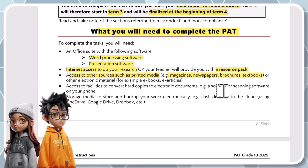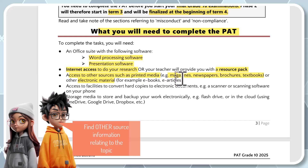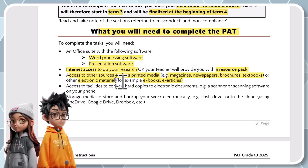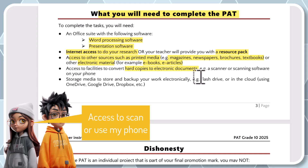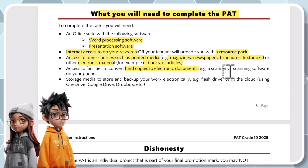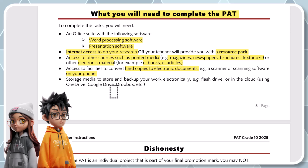You also need access to other sources. A lot of people through the years only focus on internet-based sources — but when we mark the PAT there are mark allocations for other sources. Please try to get information not just from the internet, but also from magazines, newspapers, brochures, textbooks, or other electronic media like ebooks or e-articles on the topic. You also need access to facilities to convert hard copies to electronic documents — hopefully your teacher has a scanner in the classroom.